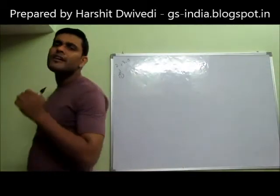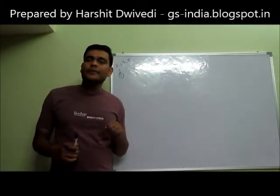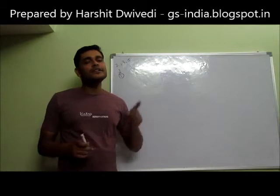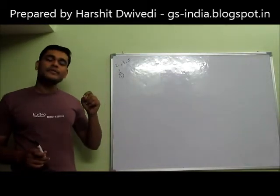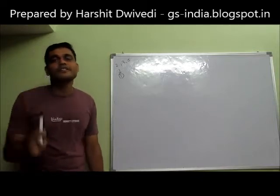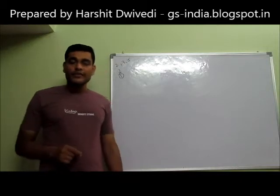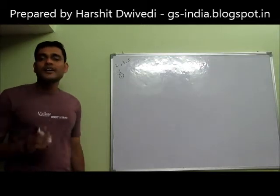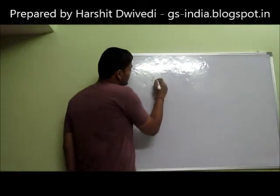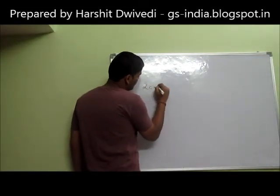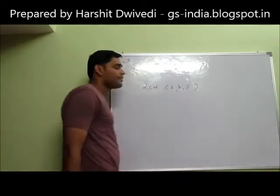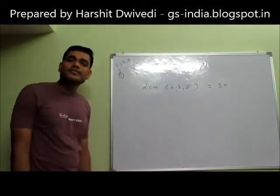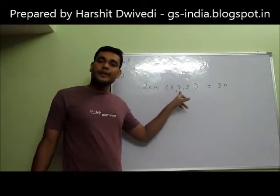Now the division is by 2, 3 and 5 — that means the number which when divided by 2, 3, 5 leaves a remainder of 1. Leave apart the remainder first. In order to solve this question, we have to calculate the smallest number which is exactly divisible by 2, exactly divisible by 3, and exactly divisible by 5. And in order to do that, we have to find the LCM of 2, 3 and 5. The LCM of 2, 3, 5 comes out as 30. So 30 is the smallest number divisible by 2, 3, and 5.